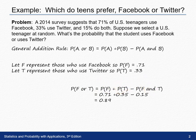Plugging in our three given probabilities, we end with a final answer of 0.89. If you'd like more practice with the general addition rule, try exercise 5 at the end of this section.